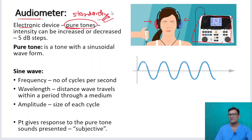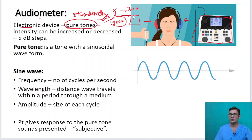Why is standardization needed? Suppose a person in India says that a patient has a hearing loss of 30 decibels — this should be comparable to what a doctor in the US would understand. If an audiologist says this person has 30 decibels of hearing loss, it should mean the same thing. Like if you say a color is red, it should mean the same red anywhere in the world.